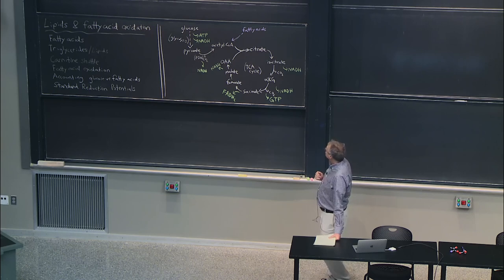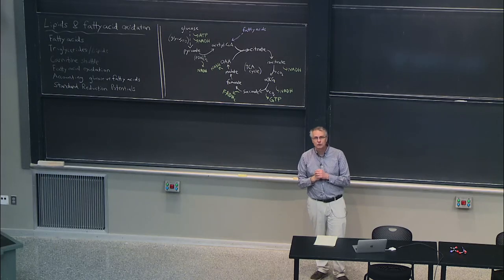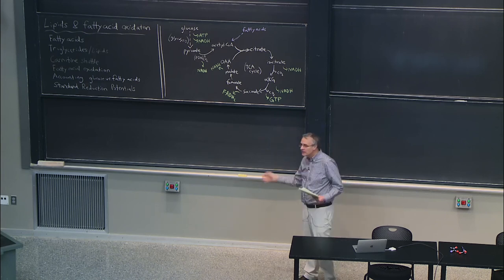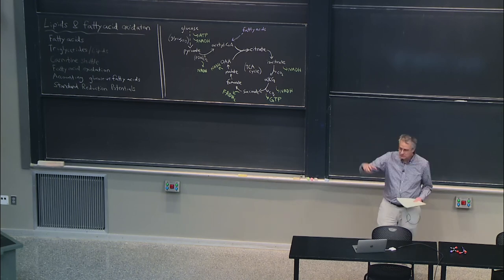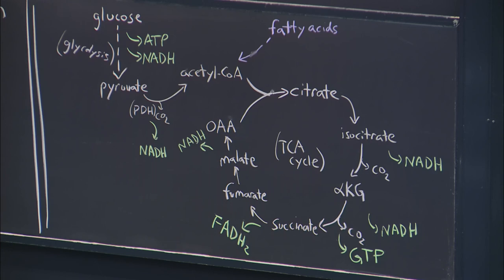The TCA cycle is useful because it allows you to oxidize anything that can be turned into acetyl-CoA into CO2, including fatty acids, which we'll spend a lot of time on today. The TCA cycle is also useful as a way to make lots of useful intermediates. But if we remove some stuff from the cycle, something has to be added back in — so-called anaplerosis — in order for it to continue to function as a cycle.